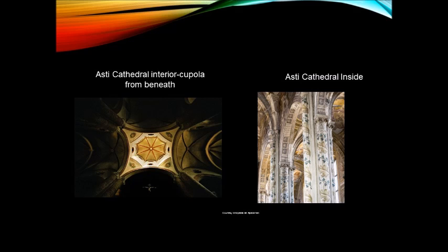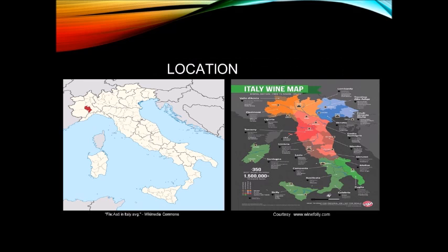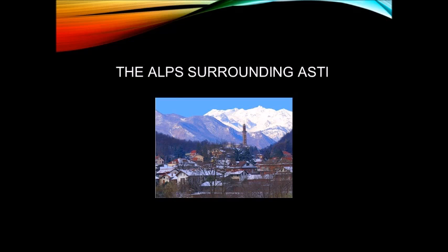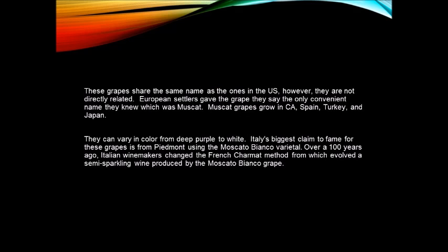Vino Nobile di Montepulciano DOCG: must be aged with 80% Prugnolo Gentile — a local Sangiovese clone. Canaiolo and Mammolo make up the rest. Cabernet Sauvignon, Merlot, and Syrah can also be used. Carmignano: made DOCG in 1990 — a blend of Sangiovese and Cabernet Sauvignon.